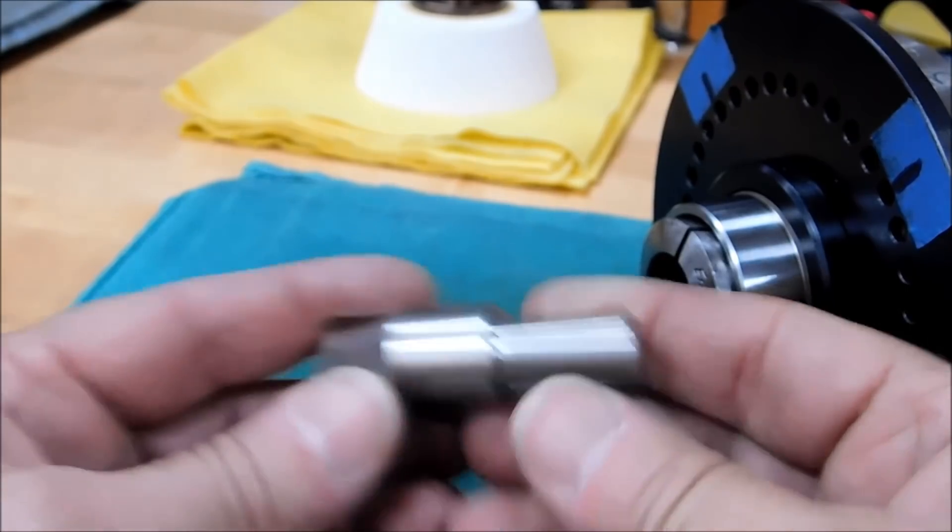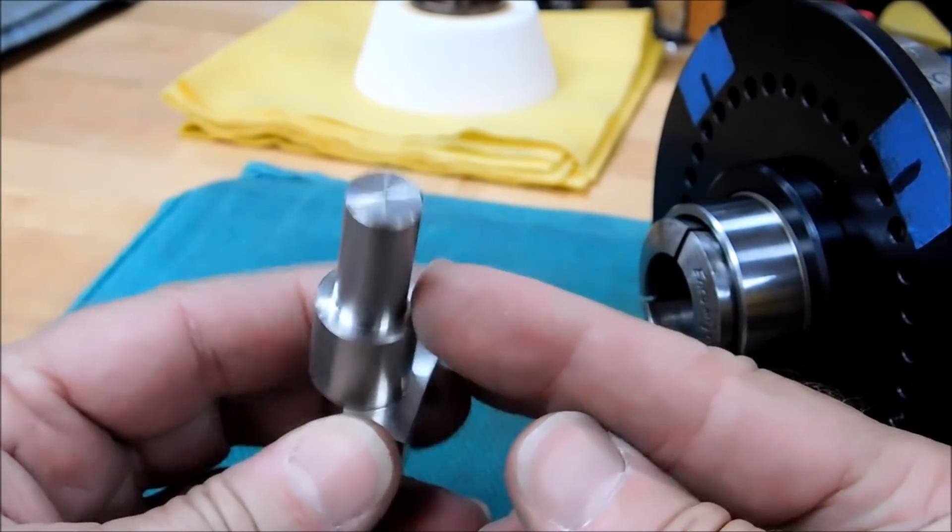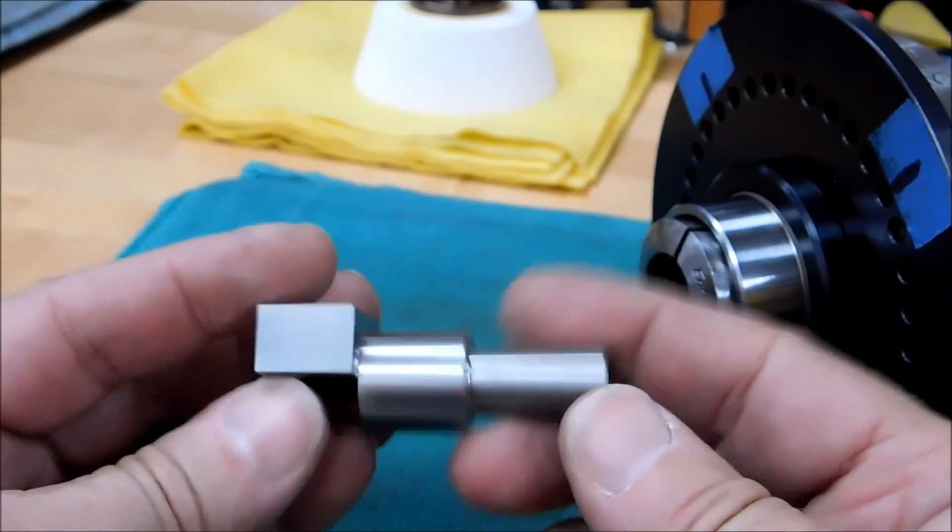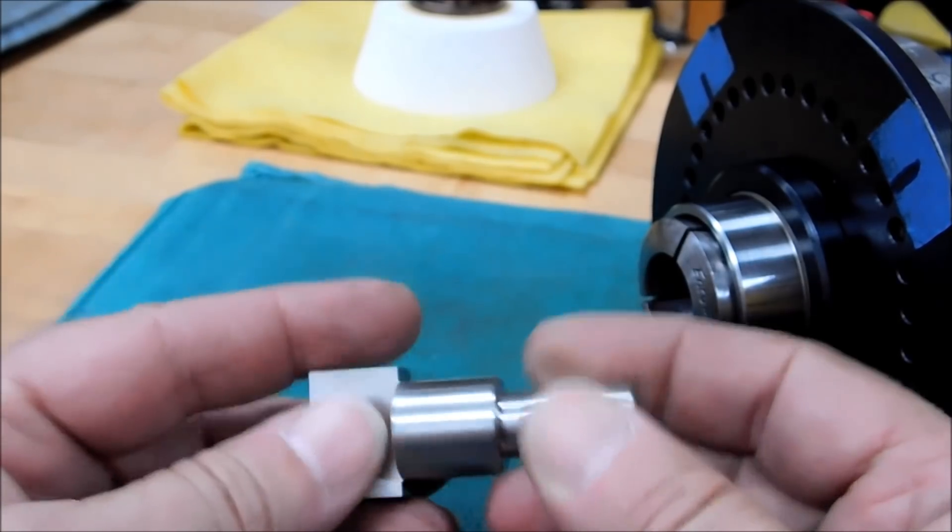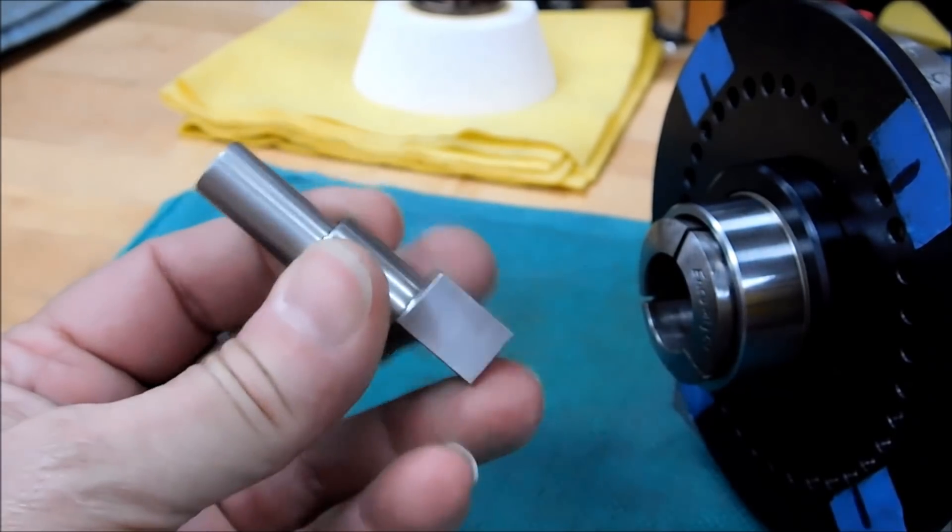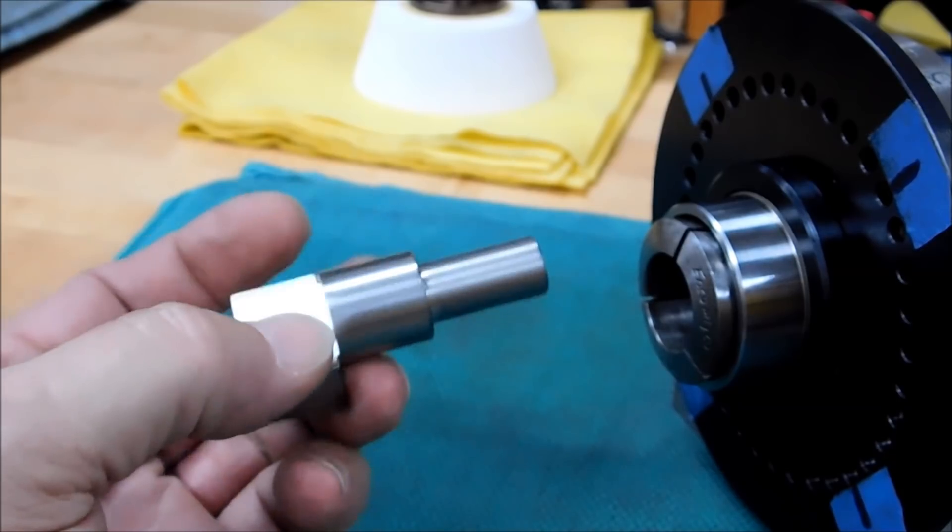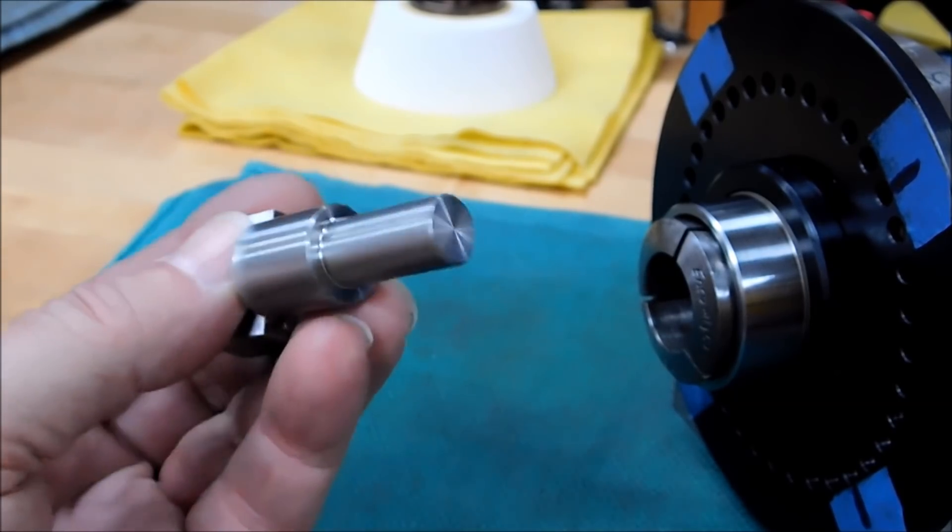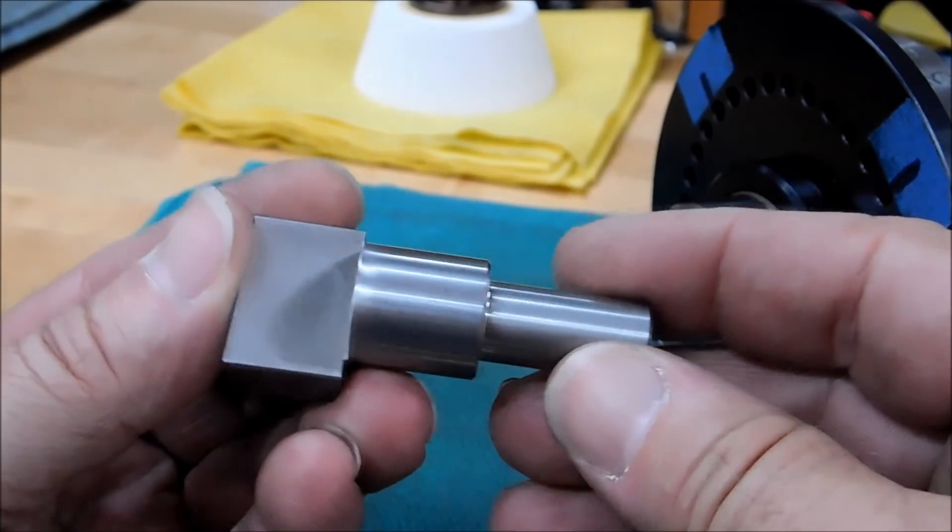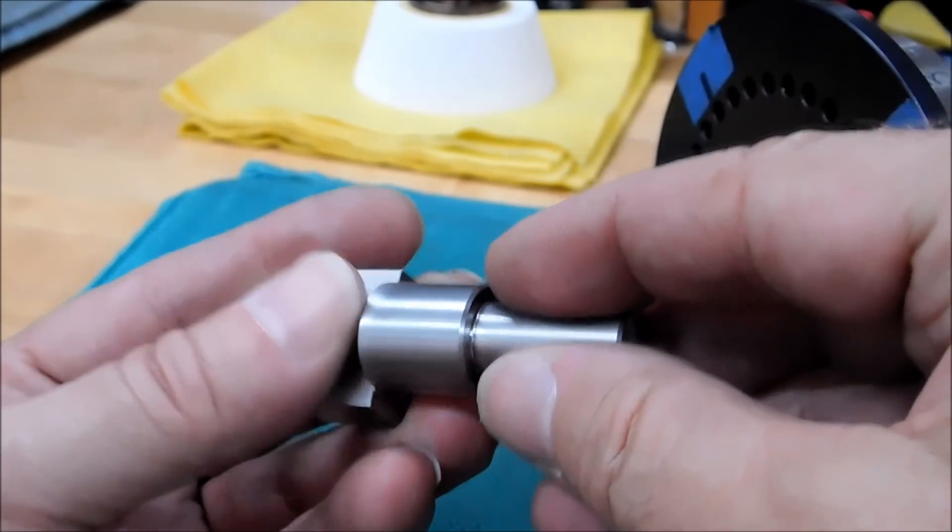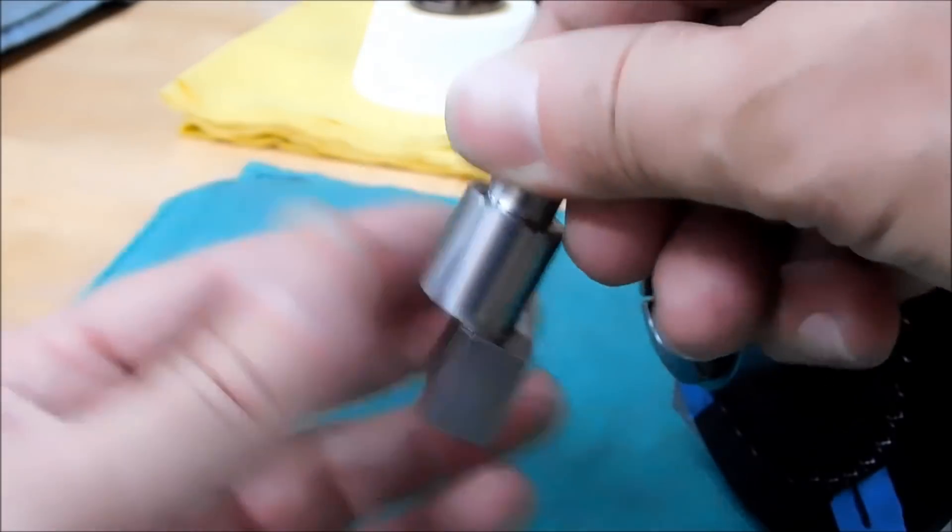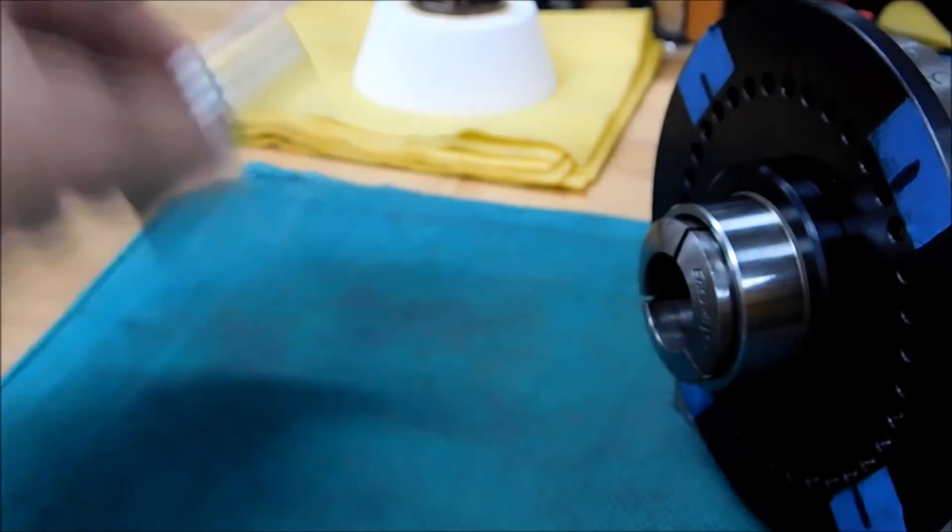And speaking of rotary tables, we now have an alignment pin offering with a 500 shank on it. Now this is a couple dollars more expensive than the straight shank because these are pulled from stock and modified. So if you have a mini mill, if you have a machine that's only got a 500 capacity, boom, there you go. It's on the website.